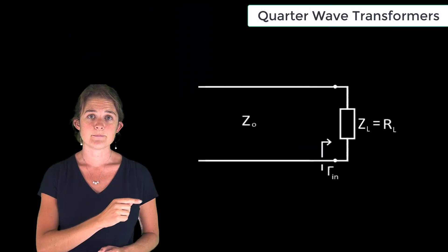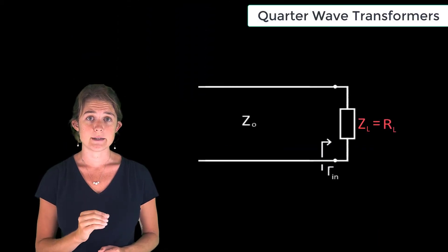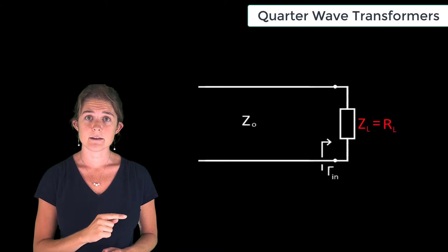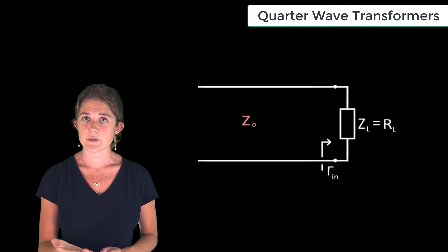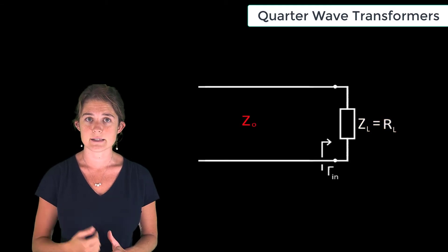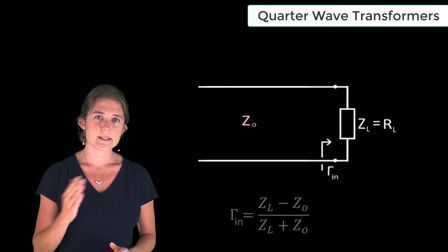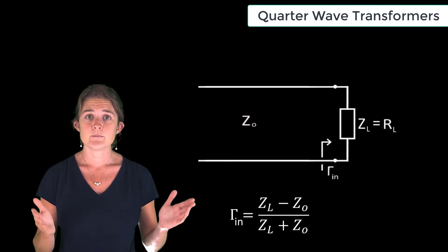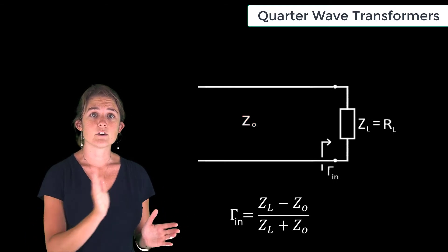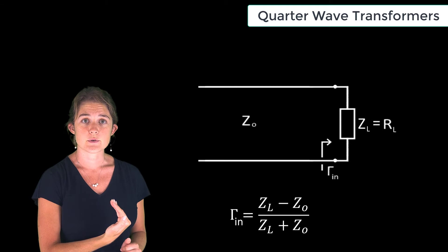Consider this circuit. A purely real load impedance of ZL is being driven using a line with impedance Z0. We know that if ZL is not equal to Z0, some of the signal will be reflected back toward the source.